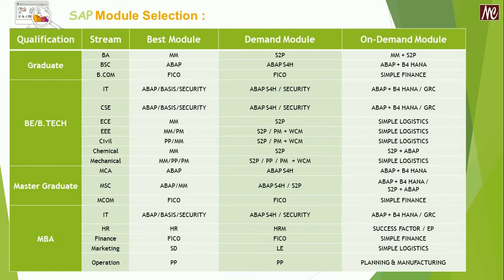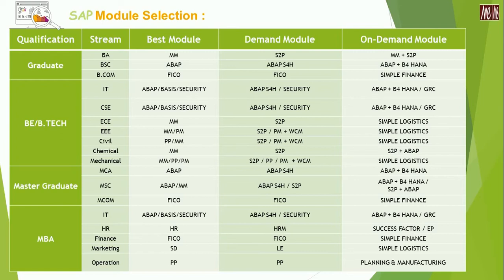Similarly, a plain BSc student seeking a career — in the leg of best module it would be ABAP, called ABAP in S/4HANA. For the demand module, it would be ABAP in S/4HANA, and if we look at the on-demand module, it would be ABAP plus S/4HANA. A BCom graduate can choose best module as FICO, demand module similarly as FICO, however, the on-demand module would be Simple Finance.